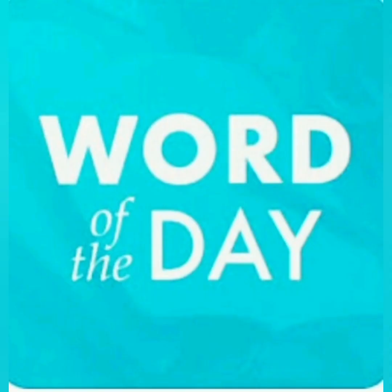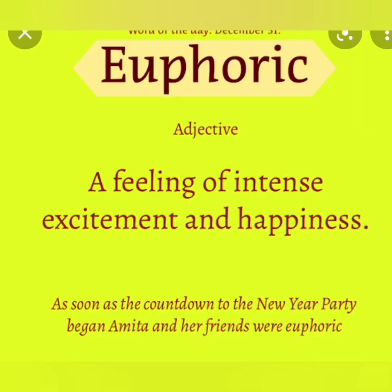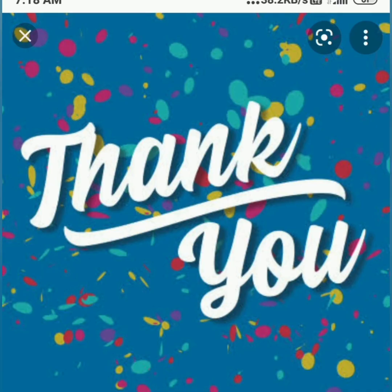Now for the word of the day. Today's word is 'euphoric' — that is an adjective meaning a feeling of intense excitement and happiness. For example: 'As soon as the countdown for the new party began, Amirtha and her friends were euphoric.' Euphoric means some sort of excitement and happiness — like when you are waiting for your birthday. Thank you, children. Have a nice day.